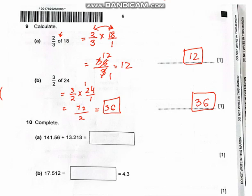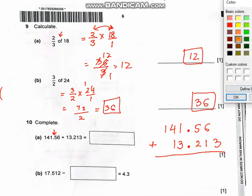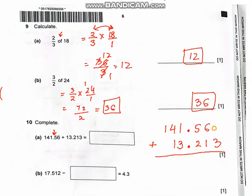Now the next question: complete 141.56 plus 13.213. This is a simple addition question, so I just have to align the decimal points. Writing it out: 141.560 plus 13.213, filling the empty space with 0. Adding them up: the answer is 154.773.